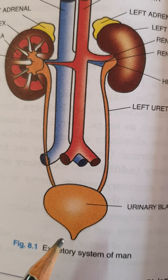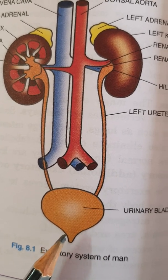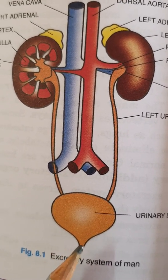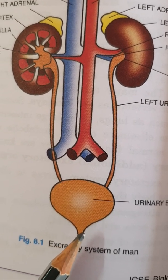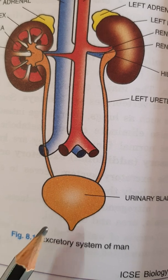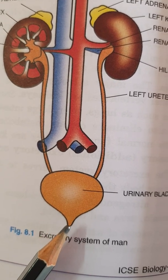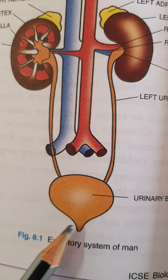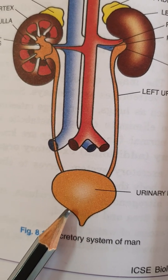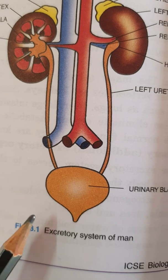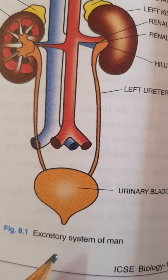The urine collected by the ureter flows into a pear-shaped structure known as the urinary bladder. The urinary bladder is present in the pelvic region of the abdominal cavity. Its wall is muscular and sphincter muscles guard the opening of the urinary bladder into the urethra.